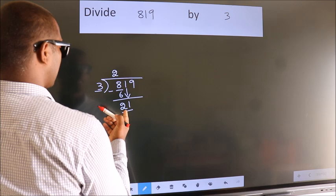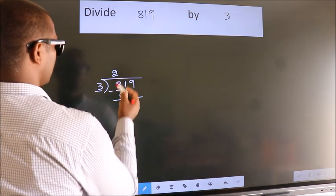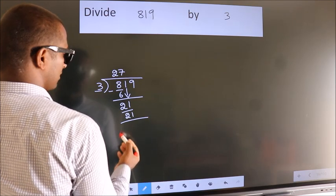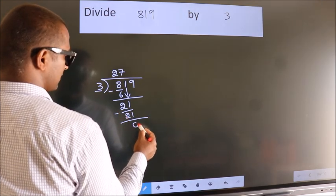When do we get 21 in the 3 table? 3 times 7 is 21. Now we subtract. We get 0.